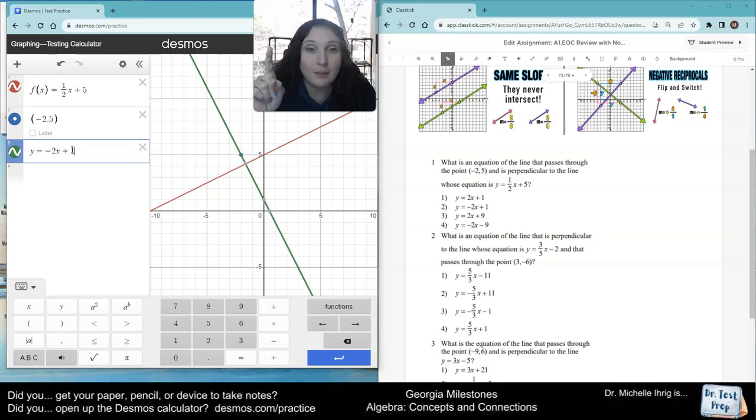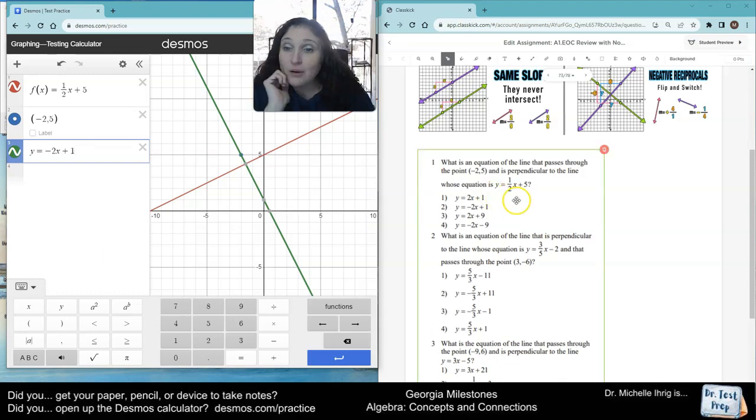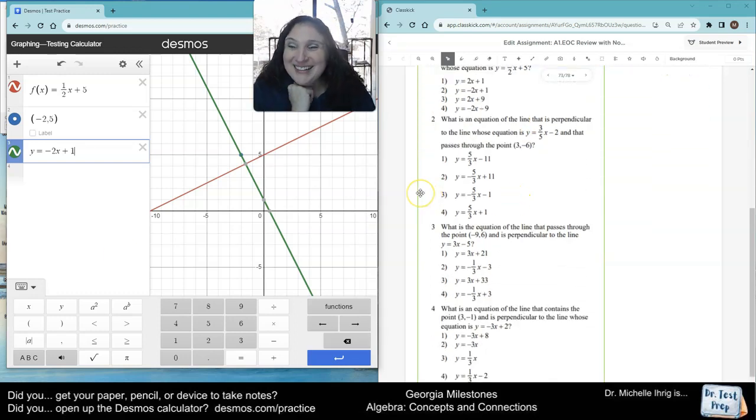Perpendicular, meaning a right angle, blue dot, score. Oh, we have more. All right, what is an equation of a line that's perpendicular to that function? So, I'm going to type in my next problem.